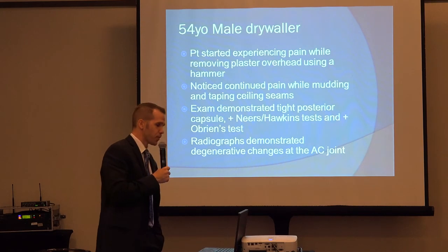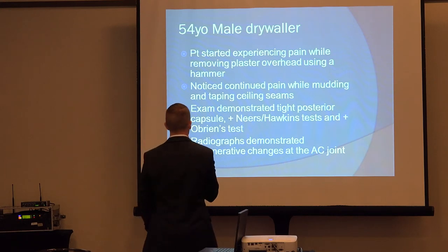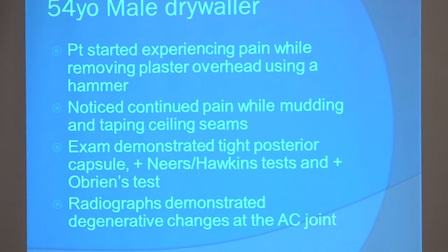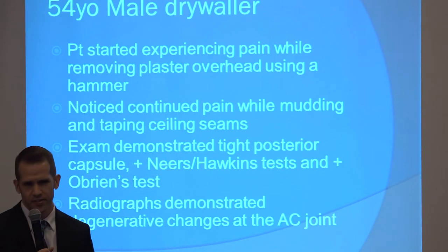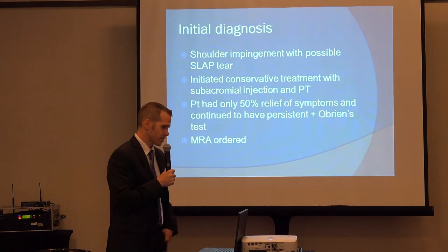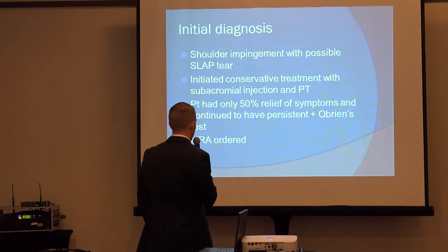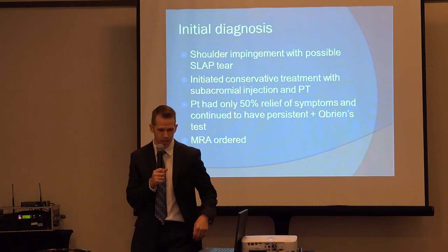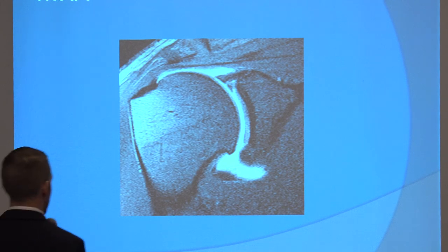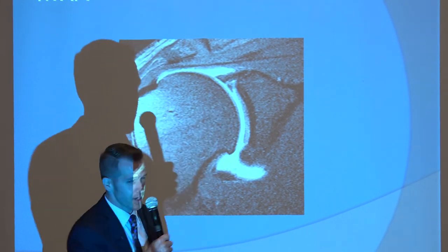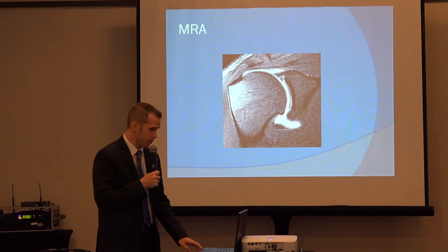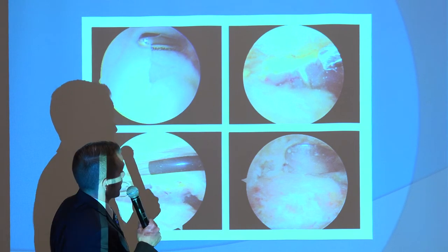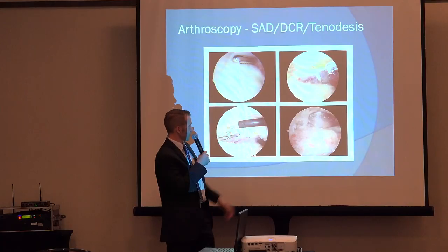Last case: a 54-year-old male drywaller who started experiencing pain while removing plaster overhead using a hammer and continued pain while mudding and taping ceiling seams. His exam demonstrated a tight posterior capsule, positive Neer's and Hawkins tests, and a positive O'Brien's test. Radiographs showed some degenerative changes of his AC joint but were otherwise negative. The diagnosis was shoulder impingement with a possible SLAP tear. Conservative treatment was tried with a subacromial injection and physical therapy, but he only had about 50% relief and continued to have persistent pain on O'Brien's testing. An MR arthrogram was ordered and showed a superior labral or SLAP tear. Secondary to his age and being a work comp patient, a tenodesis was performed, along with subacromial decompression and distal clavicle resection.